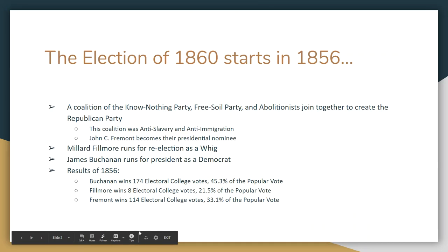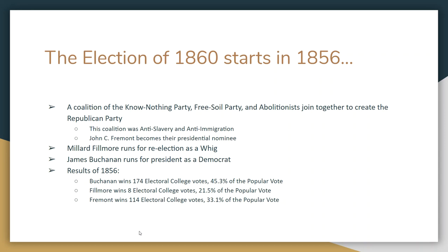We're going to talk about the election of 1860 today, and to do that we really need to go back to 1856. Right around 1856, the Know Nothing Party — the anti-Catholic, anti-immigration party — and the Free Soil Party, which were anti-slavery, along with abolitionists from various groups, are going to join together to create the brand-new Republican Party. The original Republican Party is anti-slavery, anti-immigration, and anti-Catholic — kind of the alternative party to the Whigs and the Democrats.